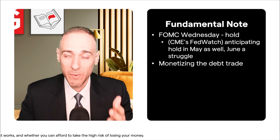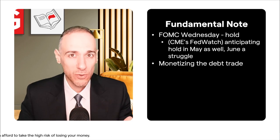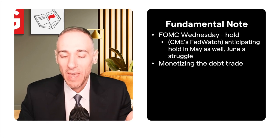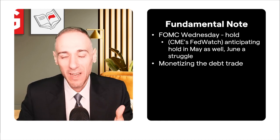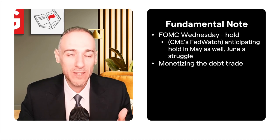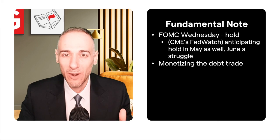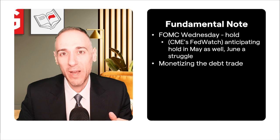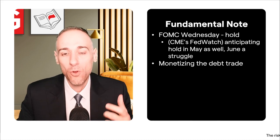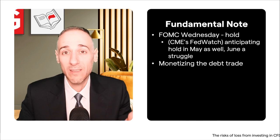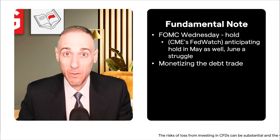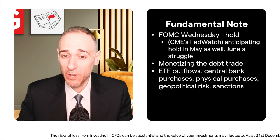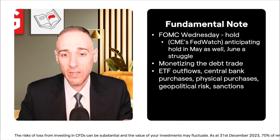Other fundamental considerations include the 'monetizing the debt' trade that has come up. Gold and related assets surged simultaneously, with people pointing to rising US fiscal deficits — roughly a trillion dollars every hundred days — suggesting the US won't be able to pay off its debt and will have to monetize it. That conversation is prompting people to consider gold as a safe haven, and it factors into some of the volatility we've been seeing.